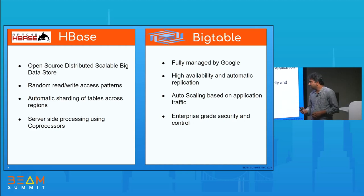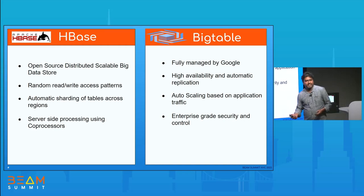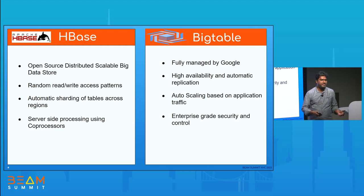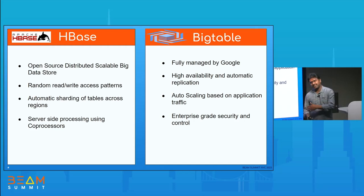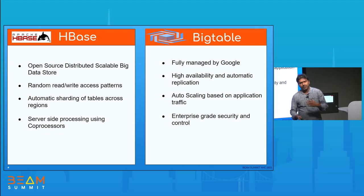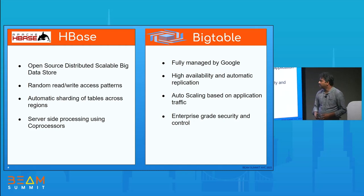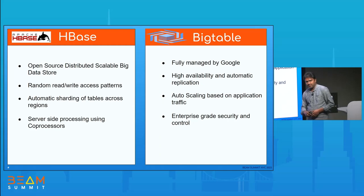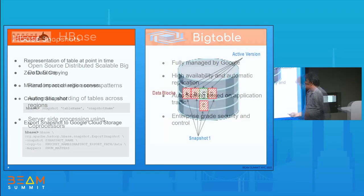With these advantages, naturally customers coming from either on-premises or from some other cloud provider who already have HBase workloads tend to choose Bigtable. So the situation is: I have HBase workloads and I'm moving to Google Cloud — I want to get rid of maintaining these clusters and take advantage of all the features available on the Bigtable side. That brings us to the migration pattern: data is located in HBase, and we'd like to move it to Bigtable, and then redirect our apps to access Bigtable.